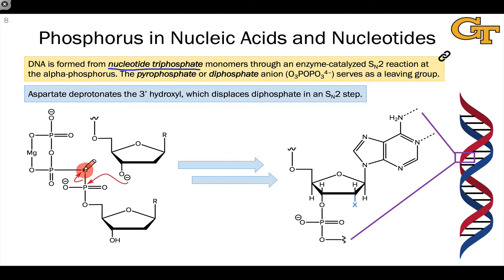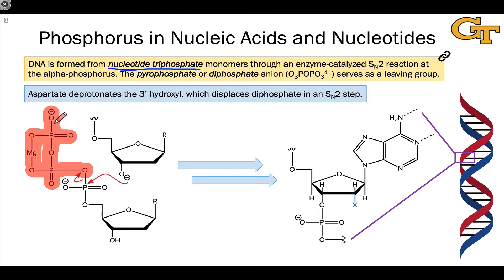The result of this is that the entire diphosphate unit, including the Mg²⁺ cation — which is there to stabilize the negative charges — acts like a good leaving group.